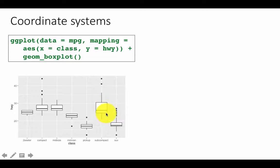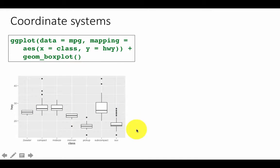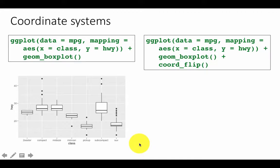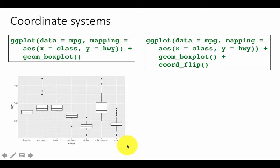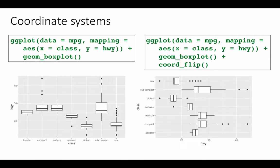You can see considerable variability in the box plots for each class — the median is different and the spread seems different. It looks like mid-size cars have the highest median. There is a way to order the bars by median value which will be covered in a future session. When category names are large they start overlapping with each other, so you may want to plot the boxes horizontally.